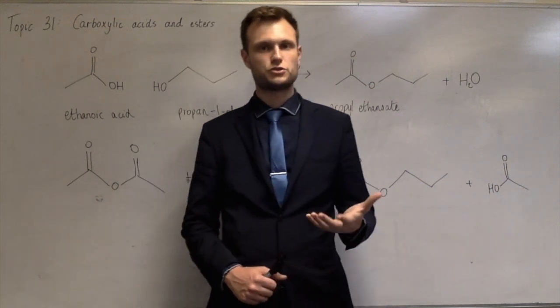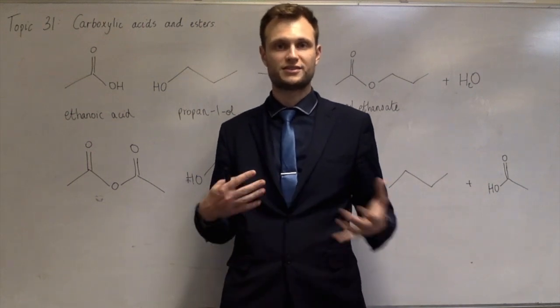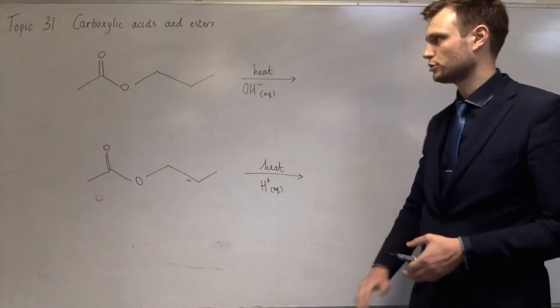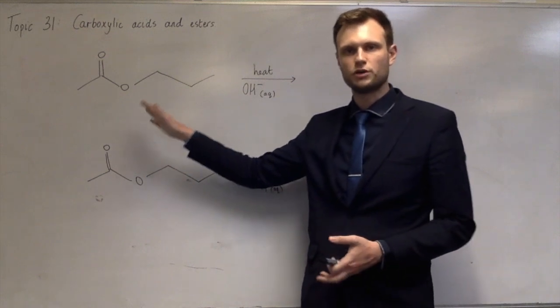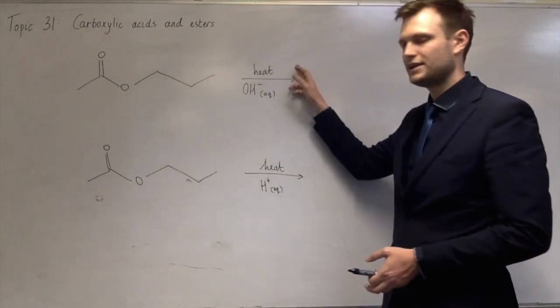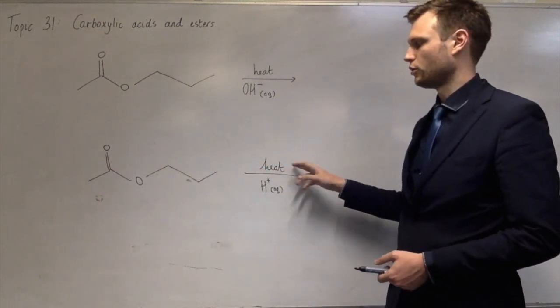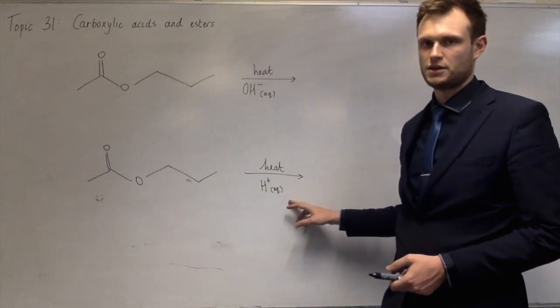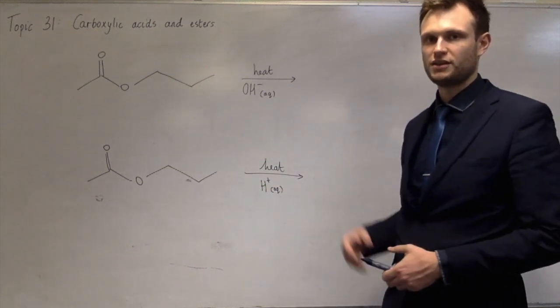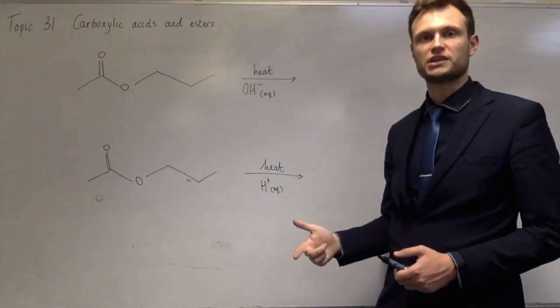But if you do acid hydrolysis or alkaline hydrolysis, you get slightly different products. Okay, so what we're doing is taking that ester, I'm using the same one, propyl ethanoate, and then heating it with aqueous alkali or heating it with aqueous acid. And in both cases, you get essentially the same thing, which is the alcohol and the carboxylic acid.